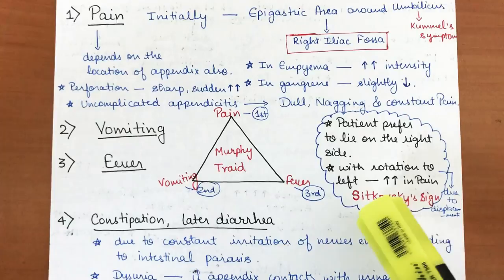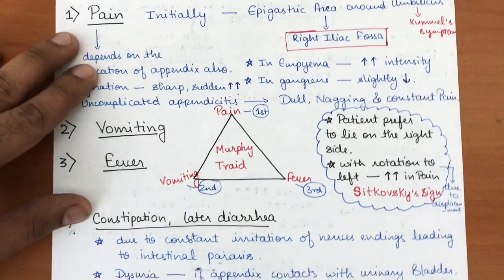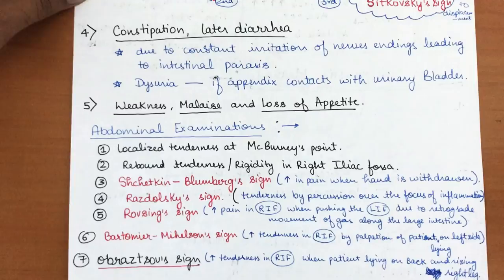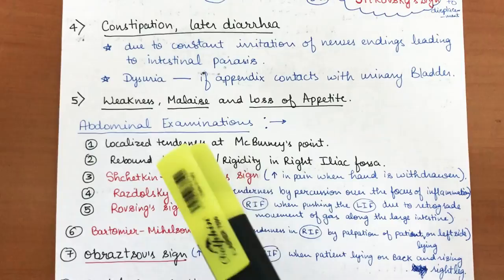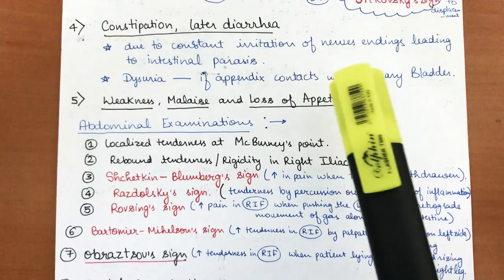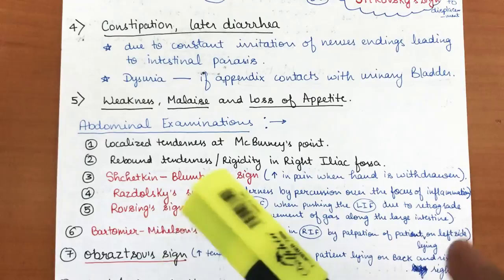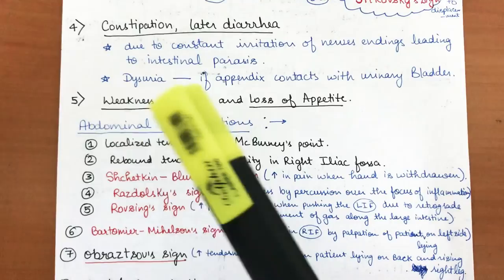Other symptoms include constipation and later diarrhea, because the appendix constantly irritates nerve endings and can lead to intestinal paresis. Dysuria can also be present if the appendix is touching the urinary bladder, disturbing its sensitivity. Weakness, malaise, and loss of appetite will also be present.